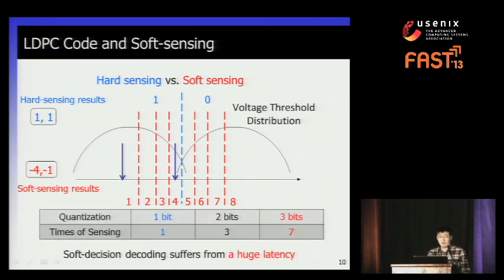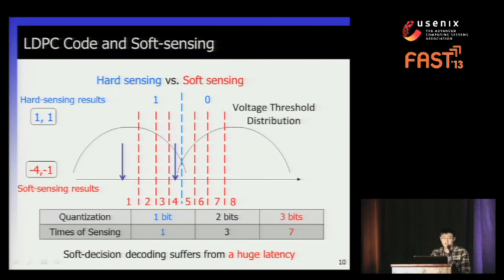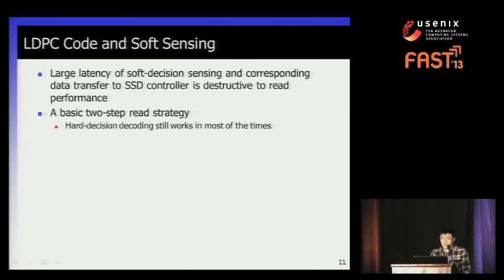However, we can see from this table that hard decision sensing requires only one sensing operation and transfers one bit from the flash chip to the controller, while soft decision requires seven sensings and transfers three bits to the controller. So soft decision decoding suffers from a huge latency, which is destructive to SSD read performance. This is totally unacceptable.